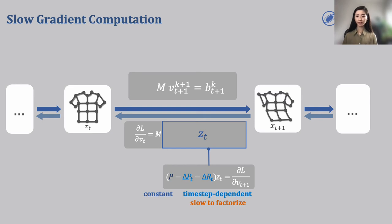But what matters here is that the system matrix of the linear system is composed of three sub-matrices. The P matrix here is a constant matrix throughout simulation, and delta P and delta R is time-dependent. This means during backpropagation, we need to compute and factorize a large system matrix for each time step, which can be very slow. Naturally, we ask, is it possible to find some tricks to make the system matrices the same during backpropagation?